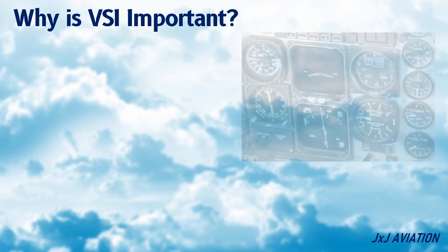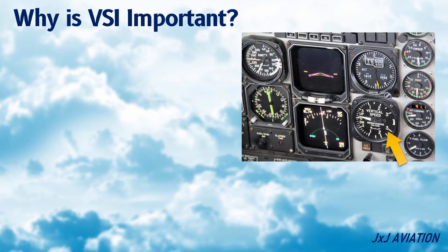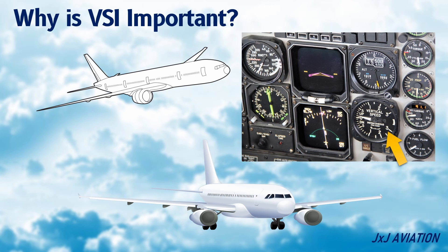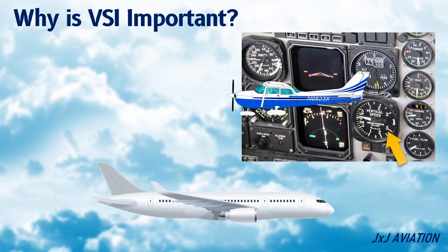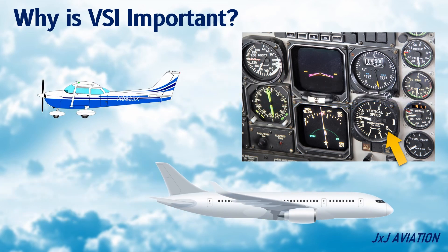This indicator indicates the rate at which an aircraft is climbing or descending in feet per minute. This information is critical during take-off and landing, and is used to adjust the speed or attitude of the aircraft. During level flight, since the aircraft is not climbing or descending, the vertical speed indication should be zero.